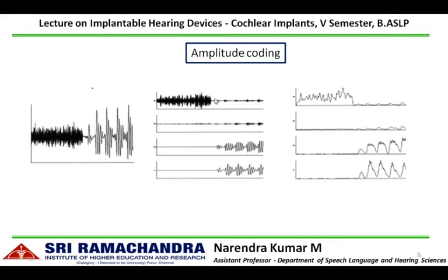Amplitude coding is done by extracting the envelope. The incoming signal passes through a series of bandpass filters splitting the frequency components. How the amplitude of the signal varies across time is extracted by an envelope extractor, which includes rectification of the bandpass filter outputs and low-pass filtering to extract the envelope. This envelope information tells how the amplitude of the incoming signal varies across time in different channels.